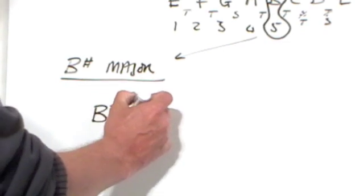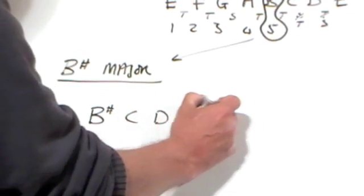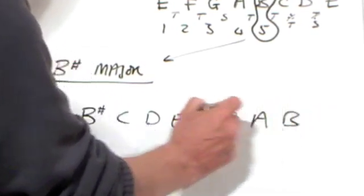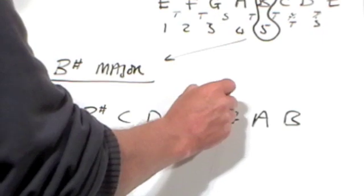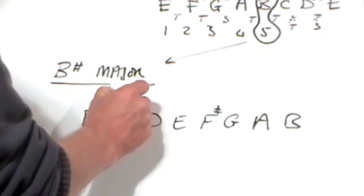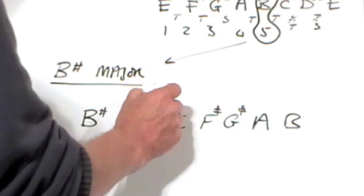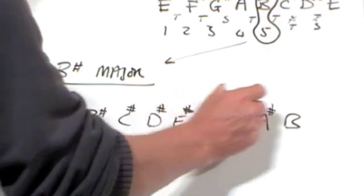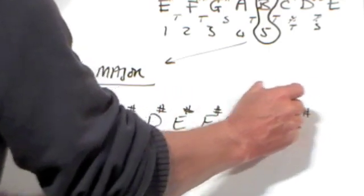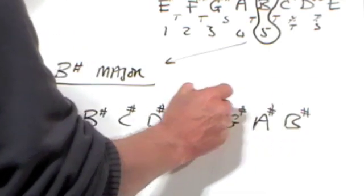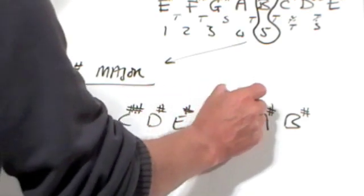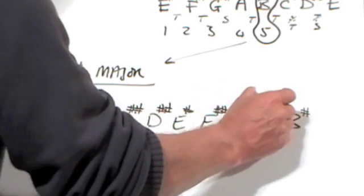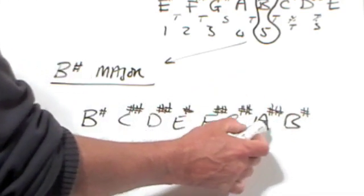So, there's our B sharp, C, D, E, F, G, A, B. Father, Charles, goes, down, and, enters, battle, Father, Charles, goes, down, and, stop there because I've come to note 7.